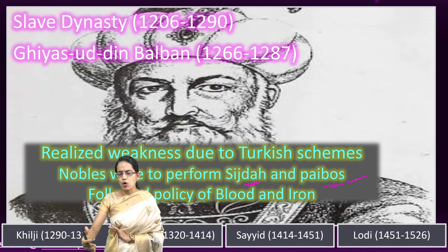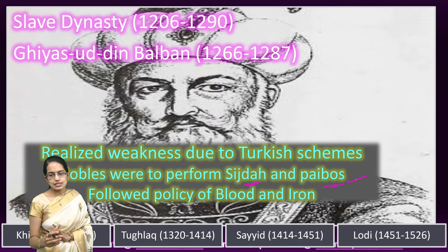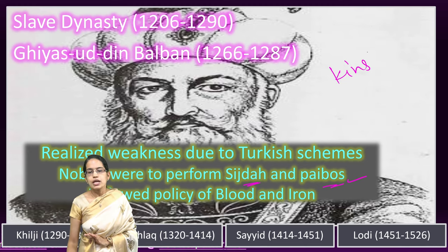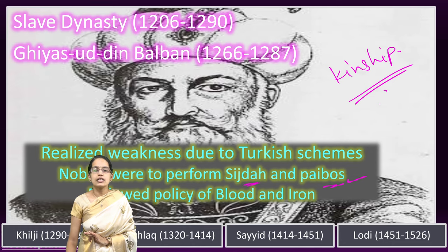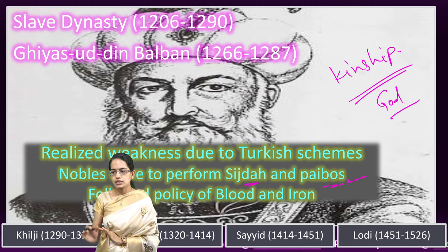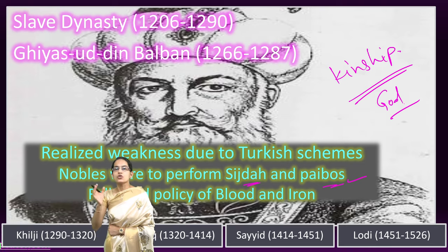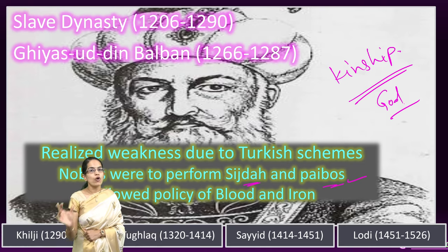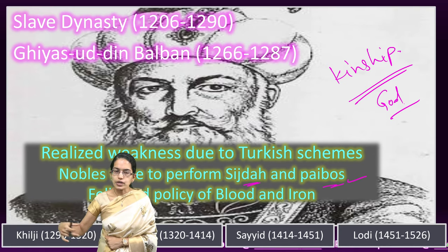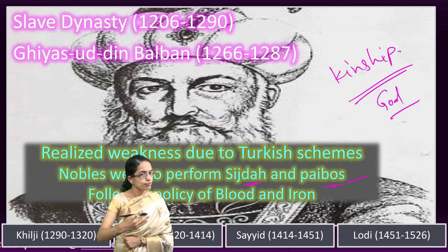He followed a policy of blood and iron, reformed the army, and ensured the nobles and courtiers were very loyal to him. Balban was also able to check the invasion of Mongols from the north. He had a very efficient spy system and believed in the theory of kingship — that the king is the representative of God on earth. He was also responsible for crushing the Chahalgani, the 40 Turkish nobles.